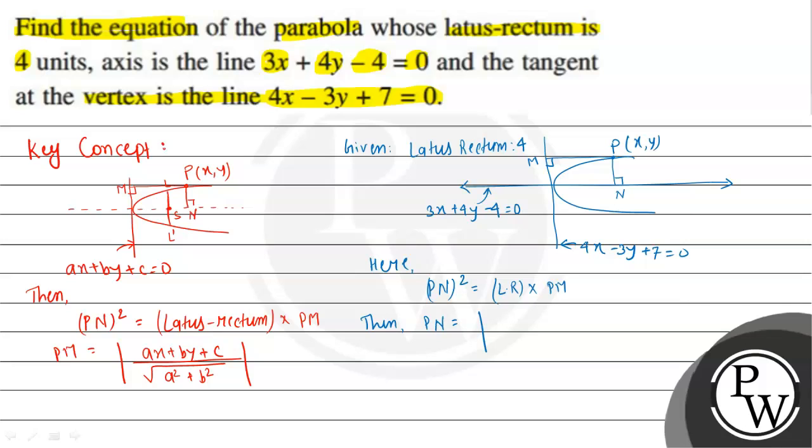PN will equal the perpendicular distance from (x, y) to the line 3x + 4y - 4 = 0, which is |3x + 4y - 4| / √(3² + 4²). Similarly, PM from point (x, y) to the tangent will be |4x - 3y + 7| / √(4² + 3²).